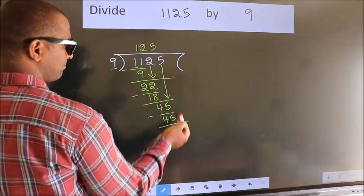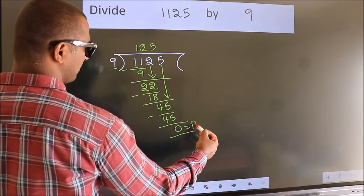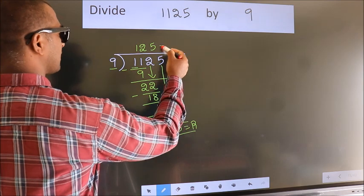No more numbers to bring it down. So, we stop here. This is our remainder. This is our quotient.